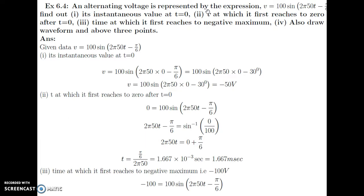An alternating voltage is represented by v equals 100 sin(2π×50×t − π/6). Find: the instantaneous value at t equal to 0; the time at which it first reaches 0 after t equal to 0; and the time at which it first reaches the negative maximum. Also draw the waveform showing these three points. Substituting t equal to 0 into the equation gives an instantaneous value of minus 50 Volts.